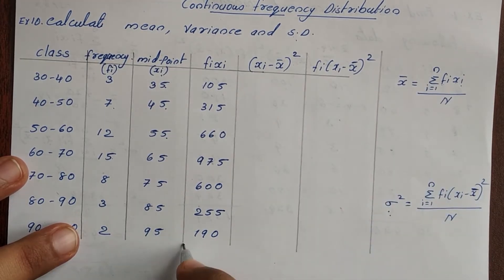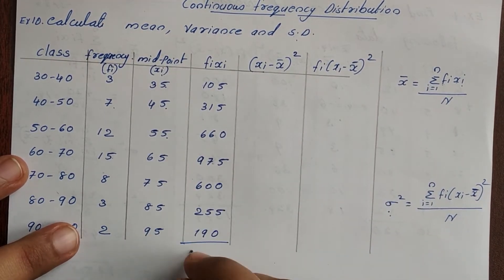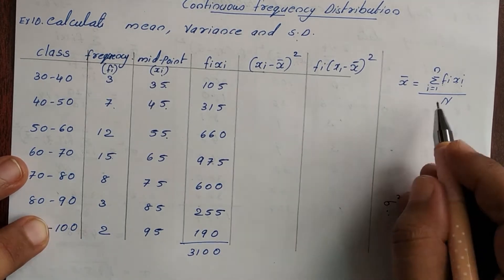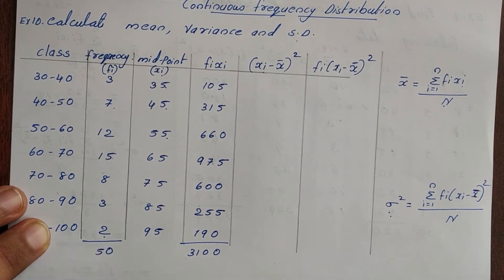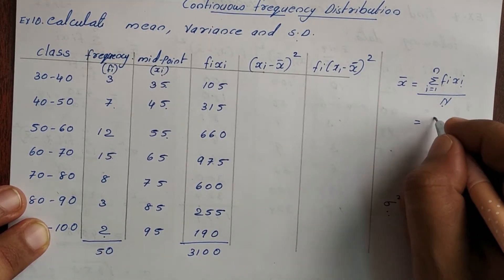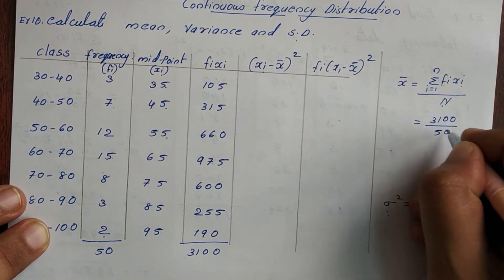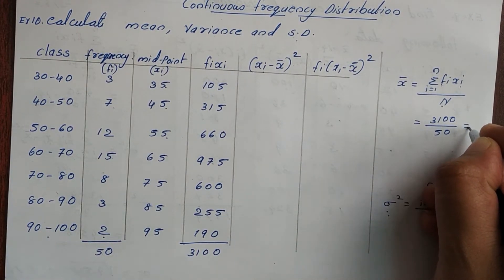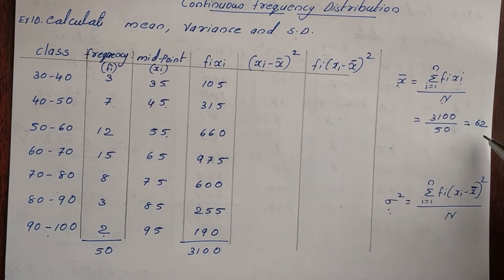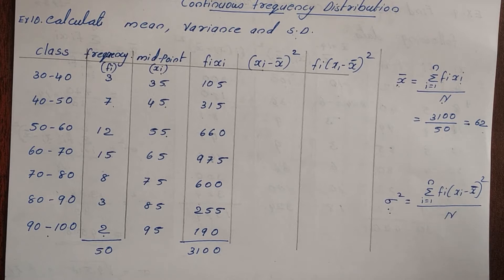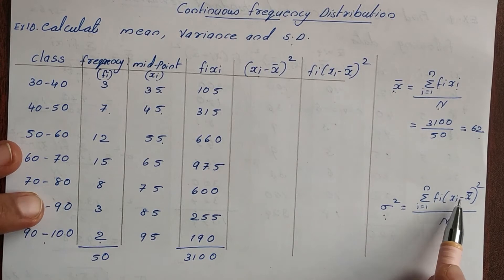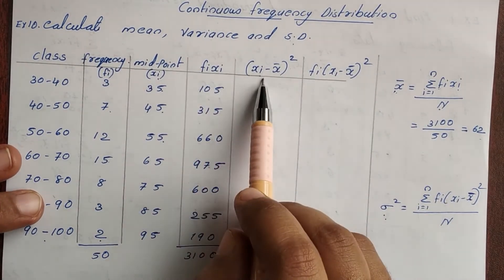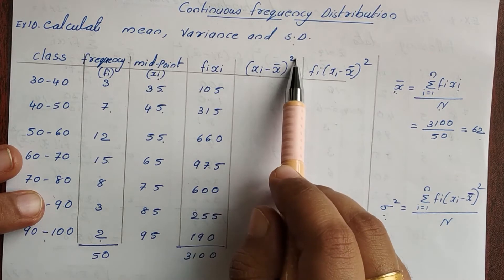Then we take this sum and add it up. We add 3100. Now we take a look at x-bar and add all the terms together to compute the mean.